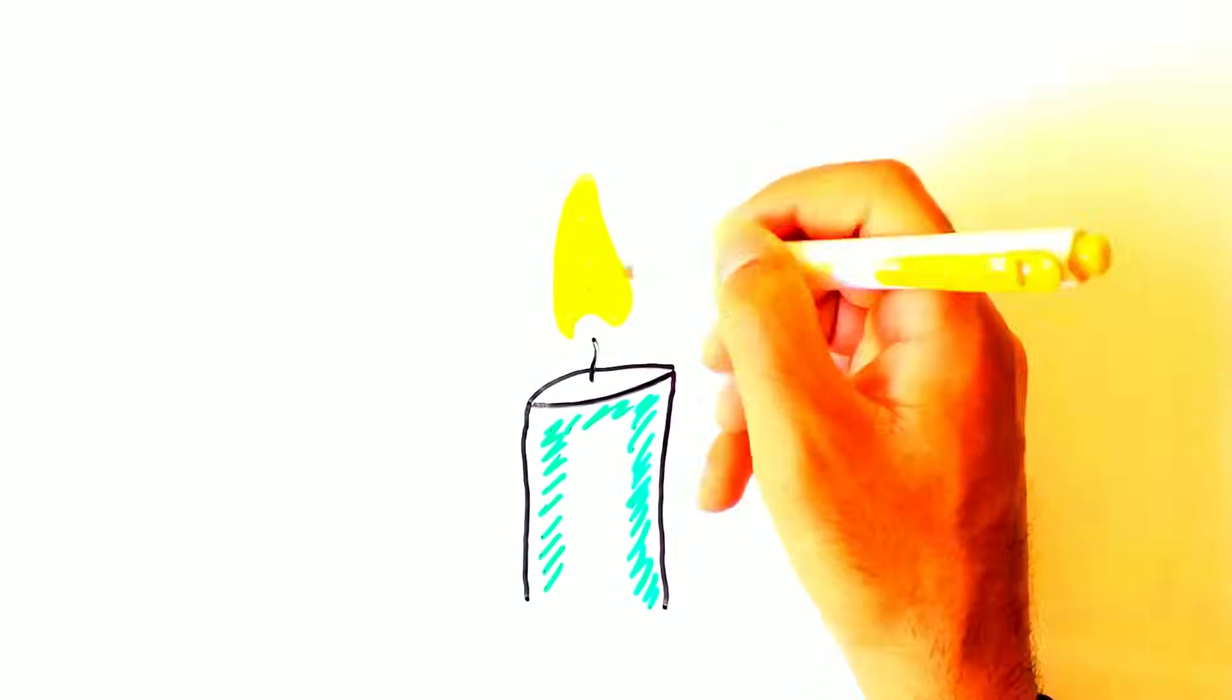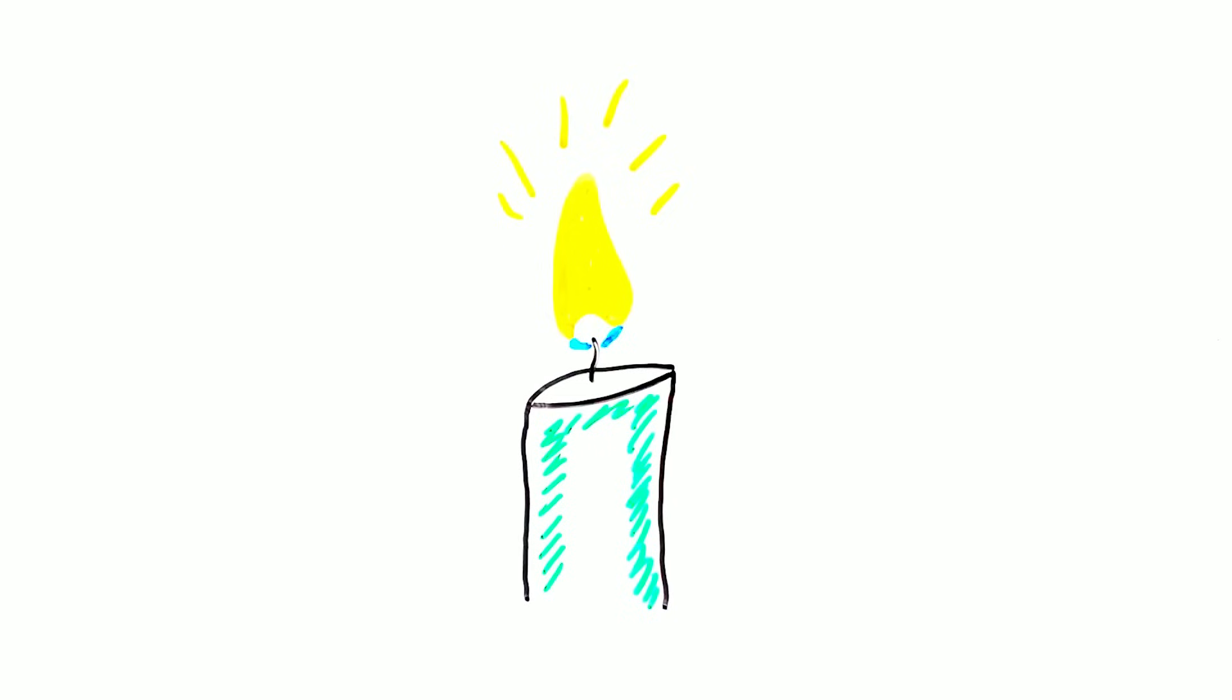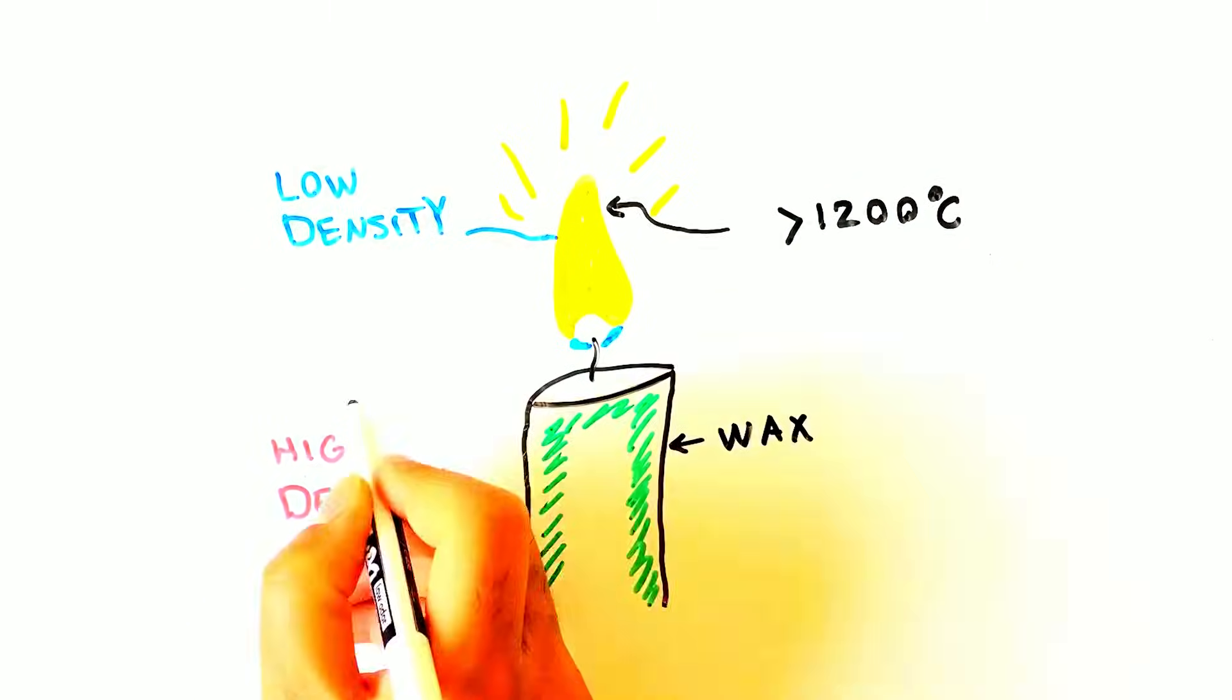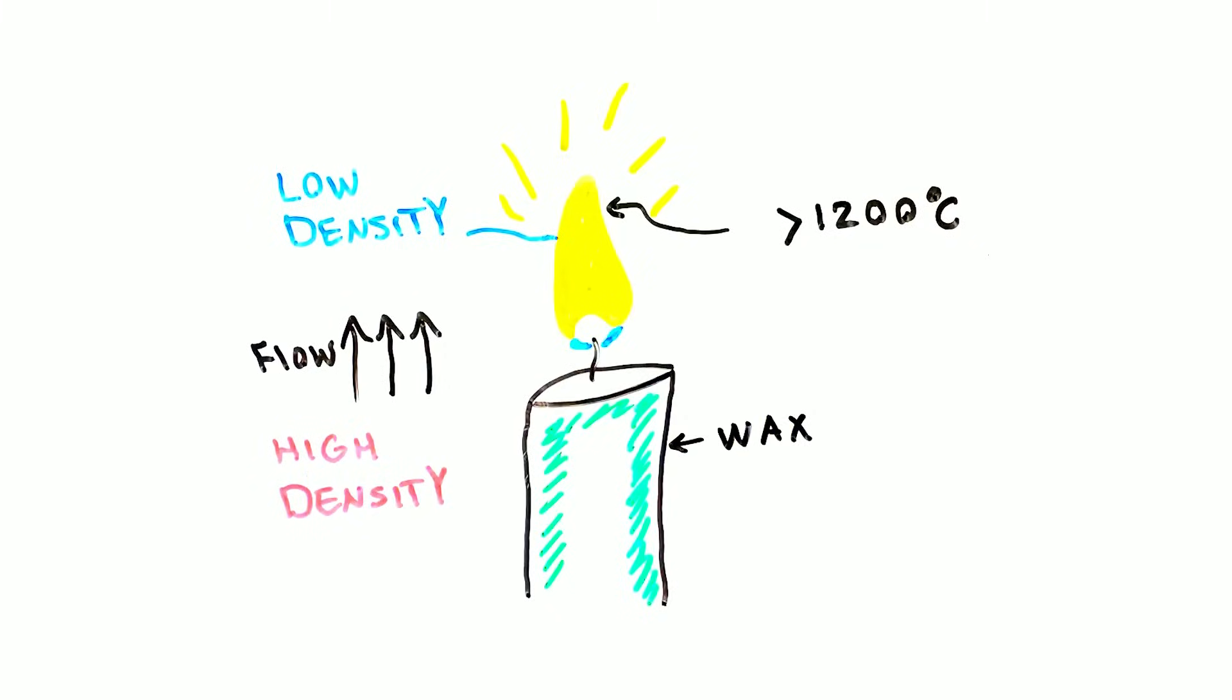The shape of a candle flame comes from natural convection around it. Burning of wax increases the temperature of the gas above the flame to more than 1200 degrees Celsius. The hot gas has a smaller density compared with the cold gas around it. Therefore, it is pushed upward by the colder gas from the bottom.